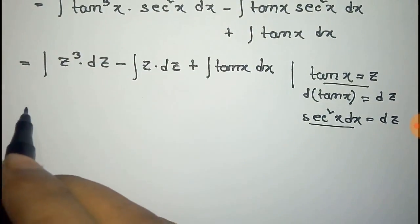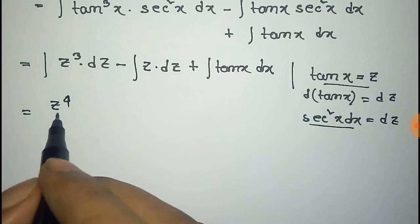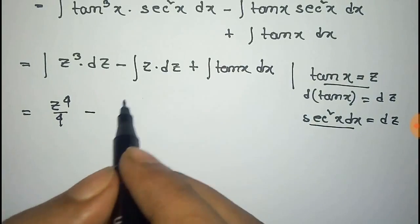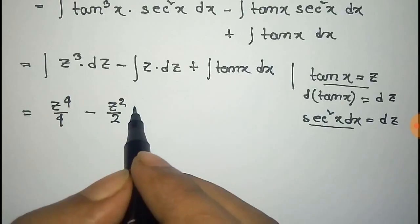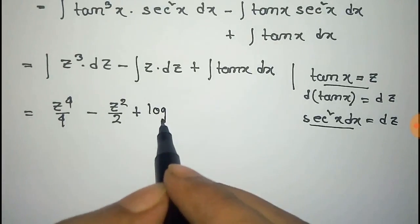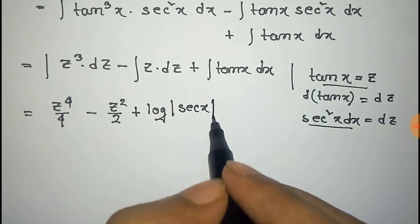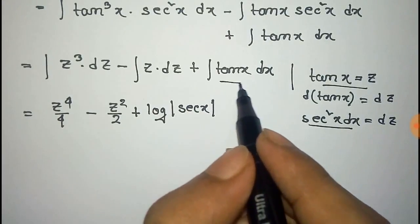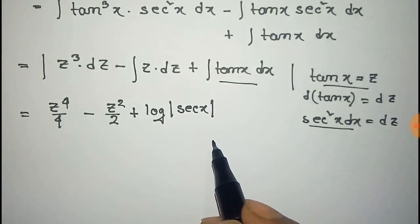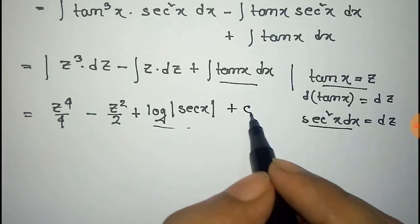Now we can integrate this. It will be z to power 4 by 4 after integration. Now this will be z square by 2. Now the integration of tan x dx is given by log of mod of sec x. For this integration you can watch our video on integration of tan x and the link is given in the description of this video, plus a constant c.